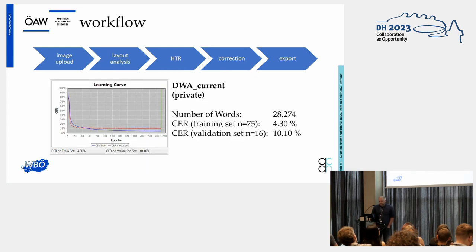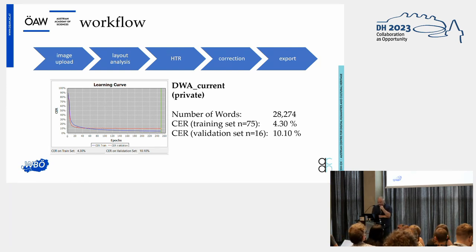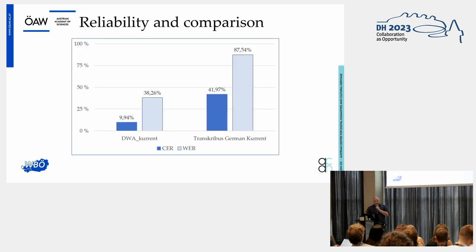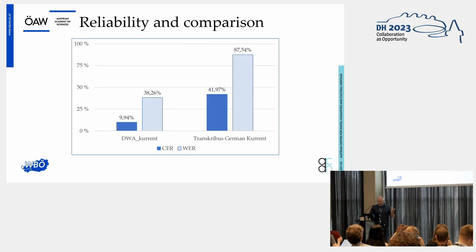So maybe it is worth creating a custom HTR model. We did this with a ground truth of only 75 sheets. The number of words is not even 1% of the big model, and the character error rate is still 10%, which is not ideal given the training size — but the big model has 3 million words for comparison. However, these numbers don't tell the whole story. When I tested reliability on a validation set, the custom DVR-Current model was much more reliable in this specific application than the large general model.